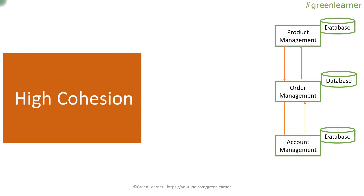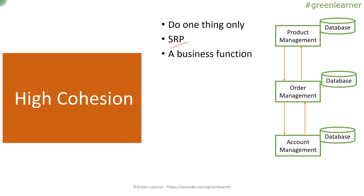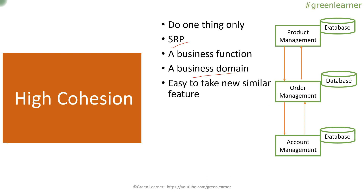The next principle is high cohesion. Each service must do only one thing. If you want product information, everyone should come to Product Management — product management functionality should not exist inside Order Management. Services should follow the Single Responsibility Principle. A business domain should be taken care of in each service, and your application should be designed so it is easy to add new related features to a single service, such as adding bulk-delete or bulk-update features to Product Management. High cohesion is necessary in microservices architecture because it helps with scalability and availability.